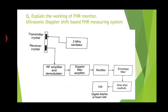Next we will see the FHR monitor, that is the ultrasonic Doppler shift-based fetal heart rate measuring system. The setup includes a transmitter crystal, receiver crystal, 2 MHz oscillator to excite the transmitter, RF amplifier, demodulator, Doppler filter amplifier, rectifier, envelope filter, one-shot multivibrator, and display.